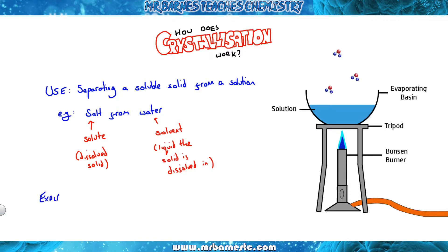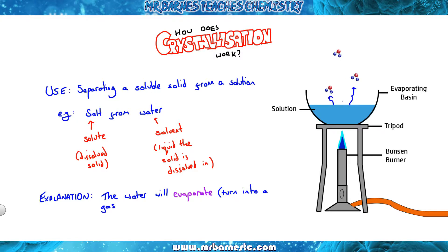So how does crystallization work? Simply, when you heat that solution — you take your solution and put it into an evaporating basin, as you can see on the right here — the water will evaporate and turn into a gas. If you heat it down to about halfway and then leave it to cool, the rest of the water evaporates and leaves behind crystals of your salt. That's why it's called crystallization.